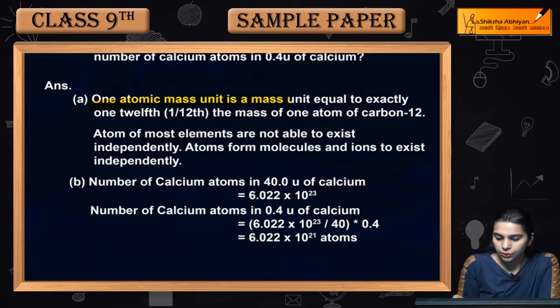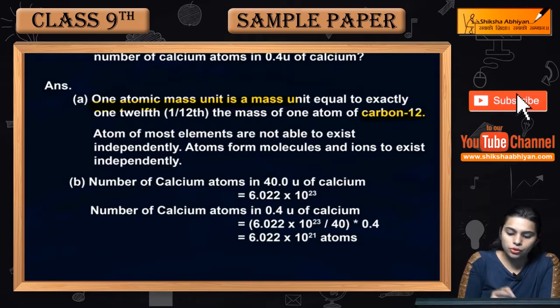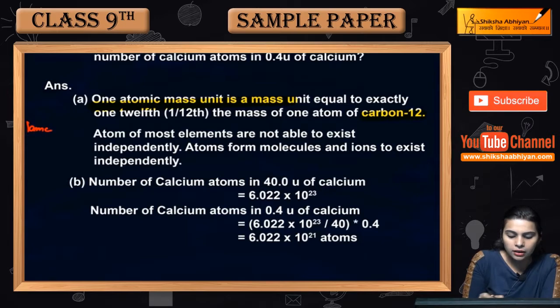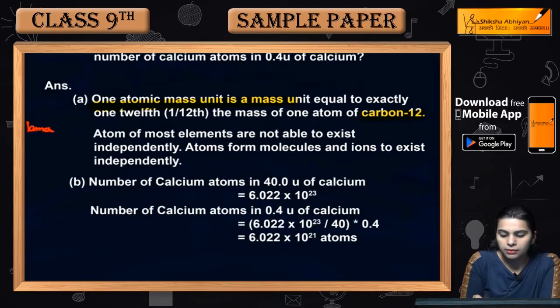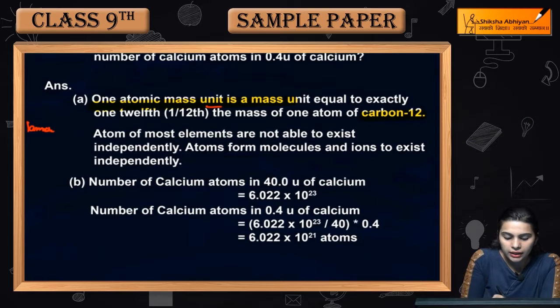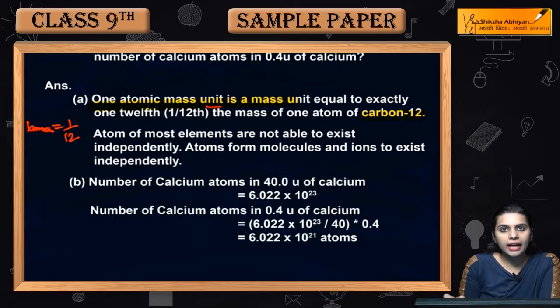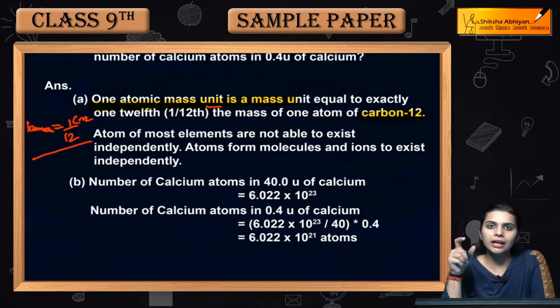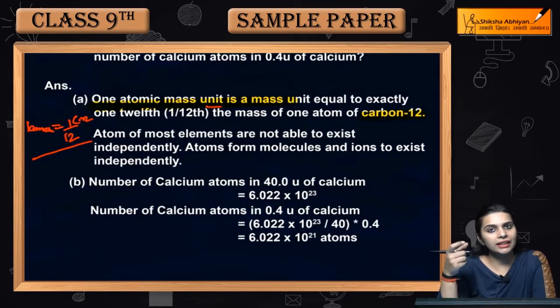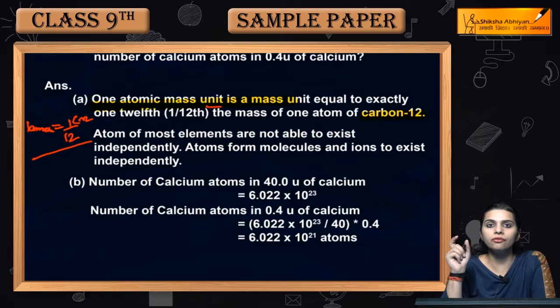So the first one is one atomic mass unit is a mass unit equal to exactly one twelfth the mass of one atom of carbon-12. One atomic mass unit is a mass unit equal to exactly one twelfth the mass of one atom of carbon-12. That is equal to 1 AMU. This is our one atomic mass unit.